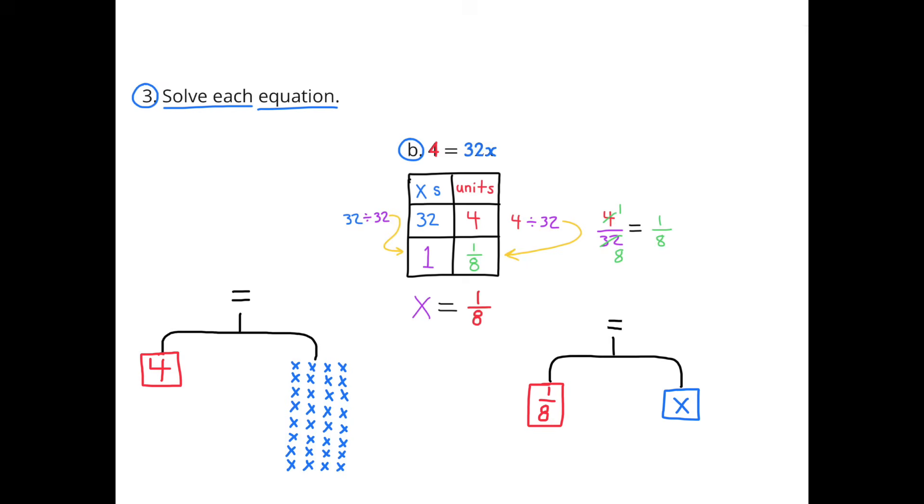B, 4 equals 32x. Directly under this equation, I have a table. And in the left-hand column, I have the x's. On the right-hand column, I have the units. So 32x's equals 4 units, or 32x equals 4. To figure out how much 1x is worth, I need to divide the number of x's by 32, and that gives me 1x. And I also need to divide the other side by 32. So 4 divided by 32 equals 1 eighth. So x equals 1 eighth.